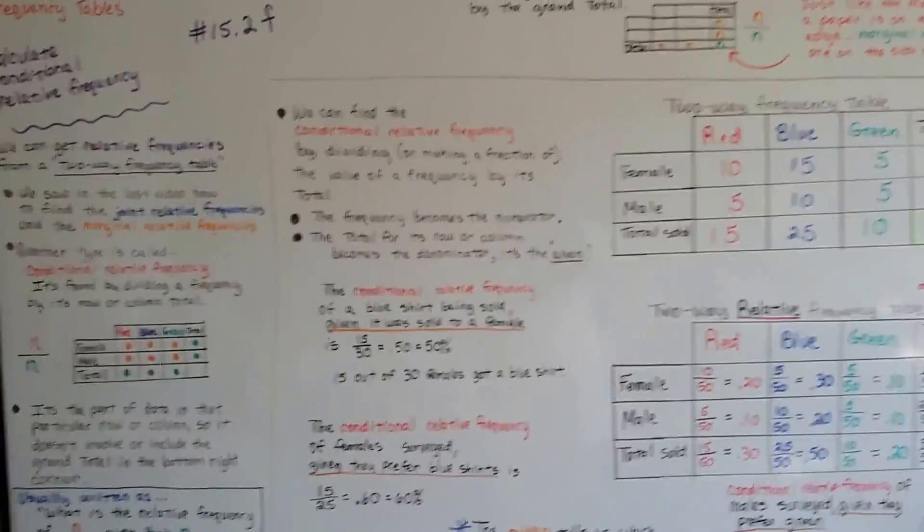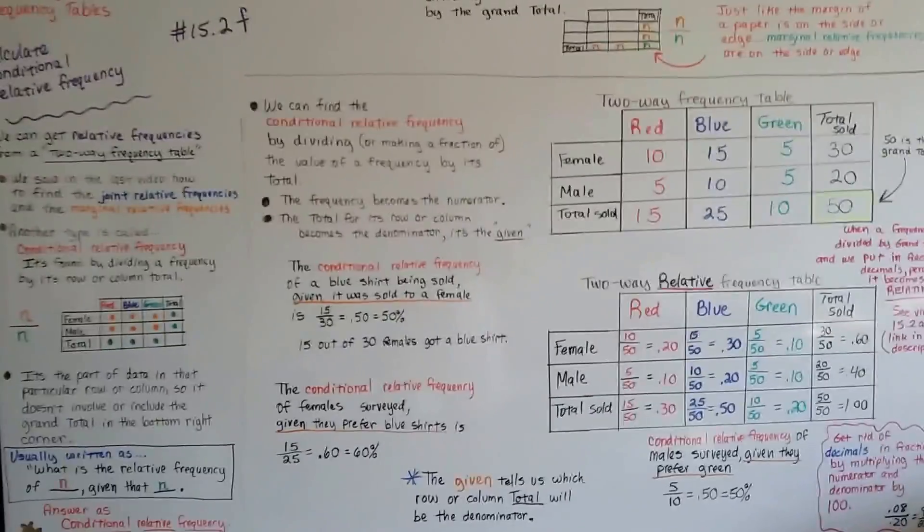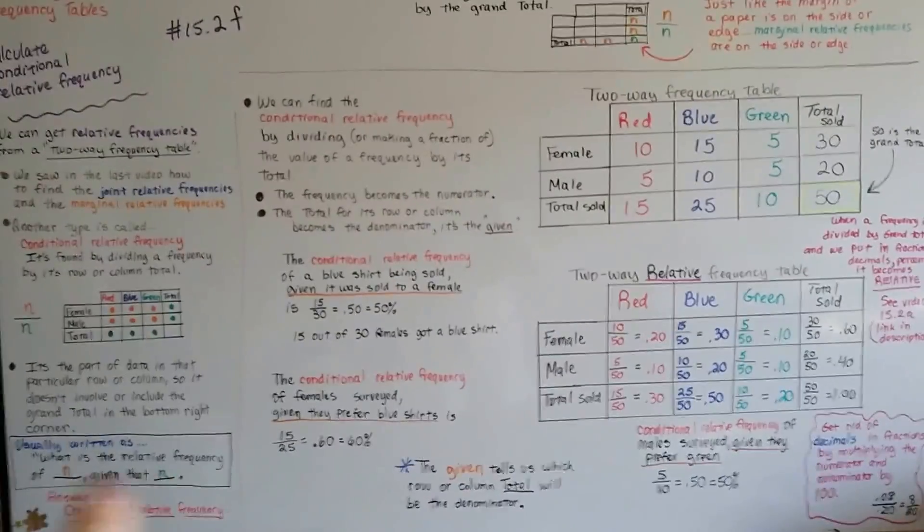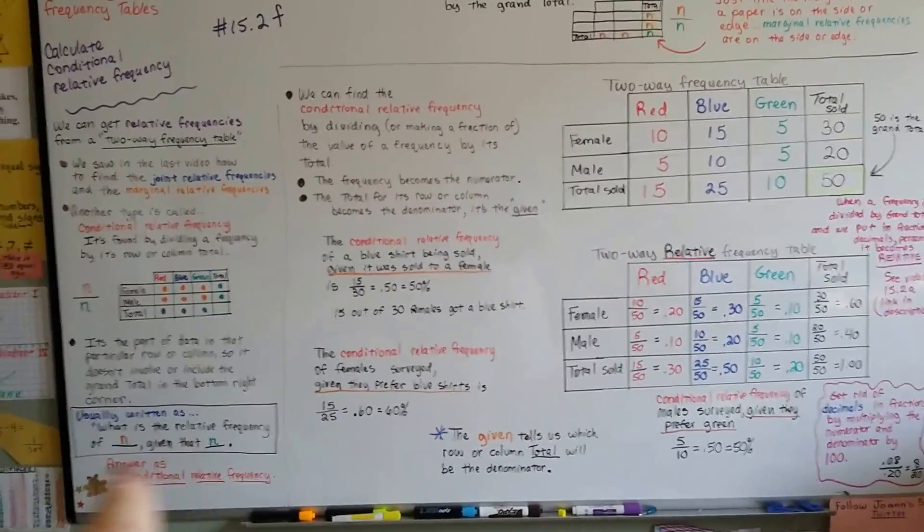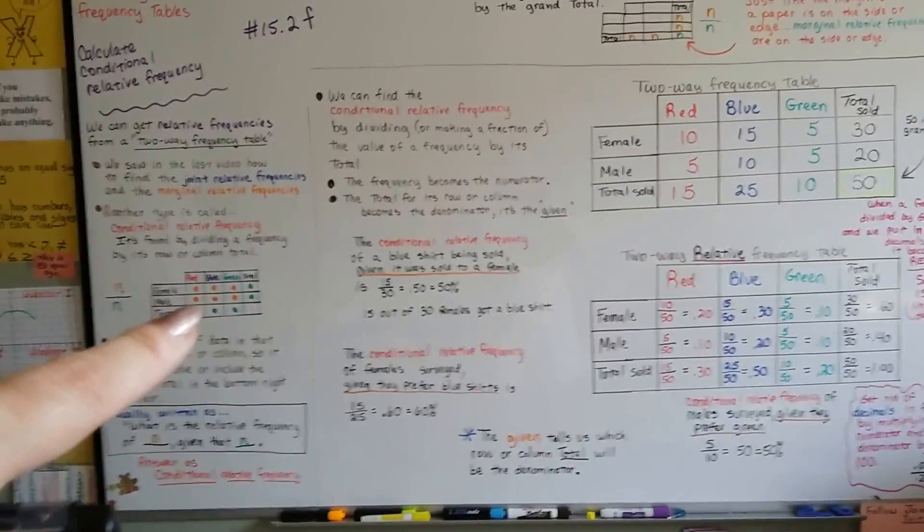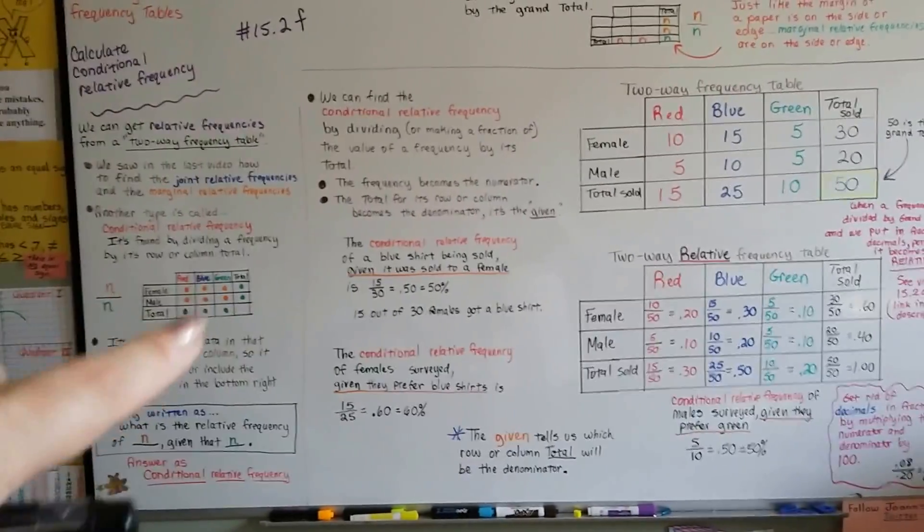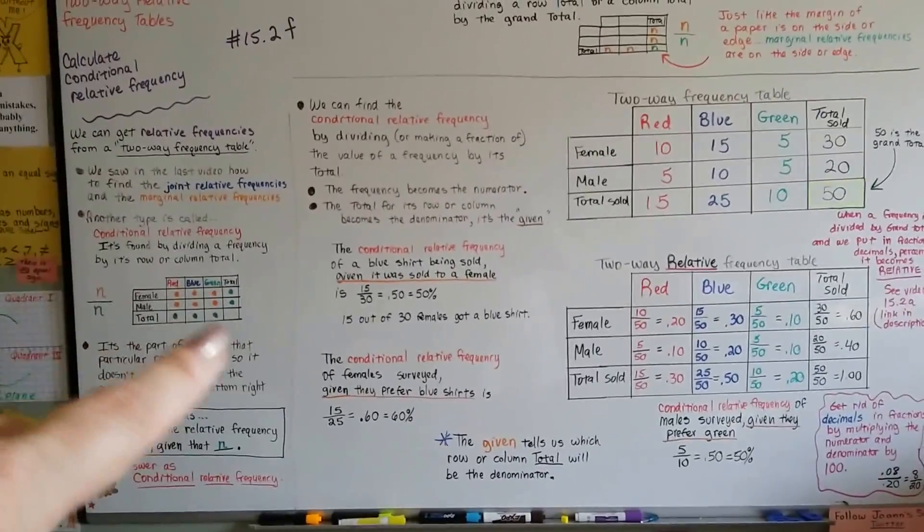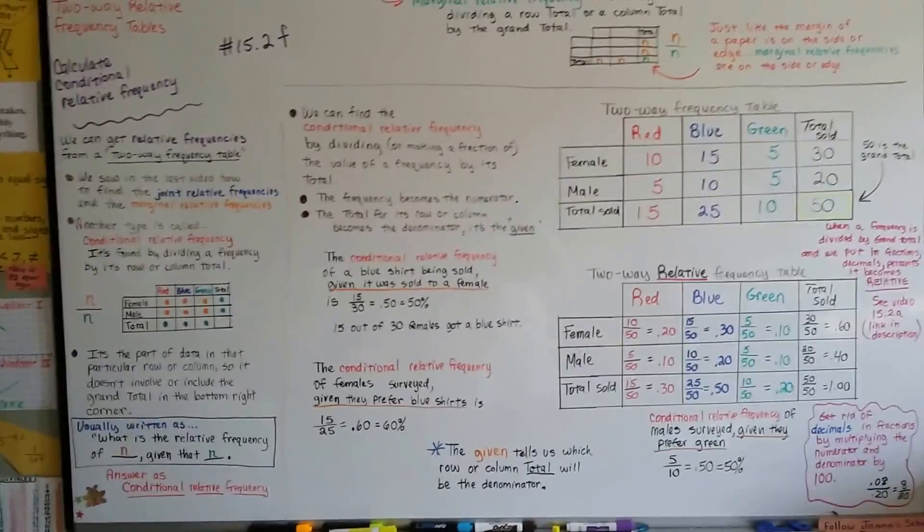So that's how we calculate conditional relative frequency. Just remember that this is the way it might appear in your work so you can identify it. And remember that it's got nothing to do with the grand total, that it's these values in that particular row or column divided by that column or row's total.